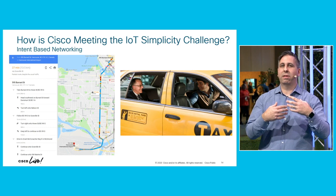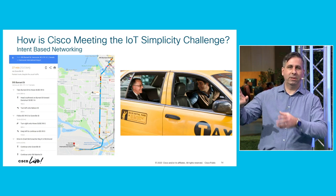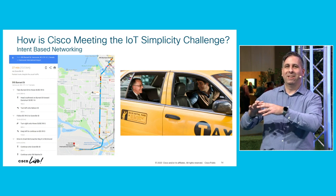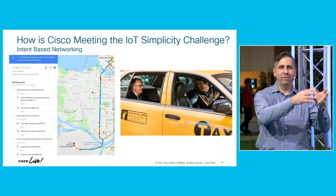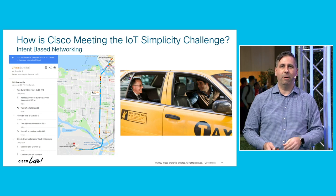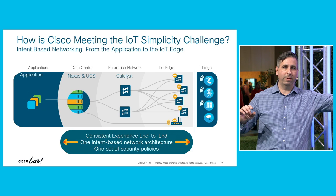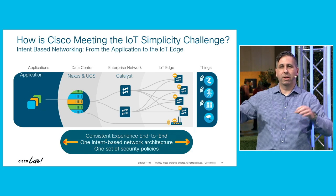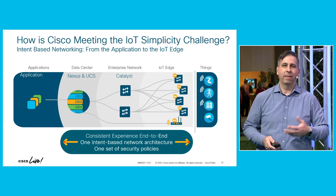To simplify that, you use what's called the declarative model. You just express your intent — what result do you want — and leave it to the intelligent agent, in this case the taxi cab driver, to deliver that intent however they see fit. That's what intent-based networking is about. We've embedded intelligence in our network controllers that deliver the intent you express, so you don't have to provide all those details. We're the only company that can provide intent end-to-end — from applications in your data center, through your enterprise network, all the way to your IoT edge.